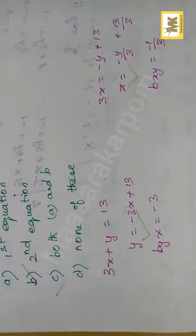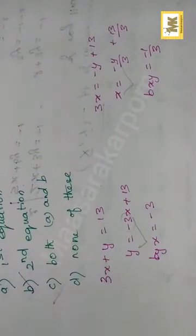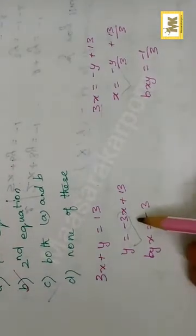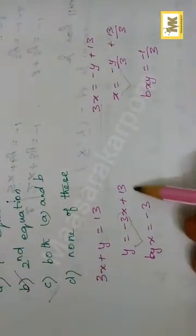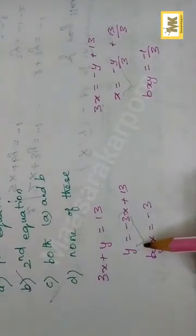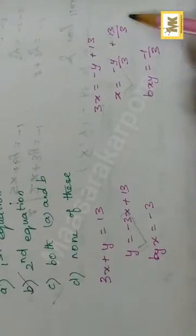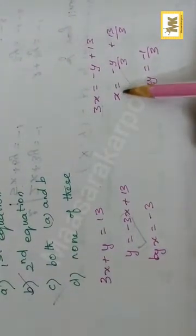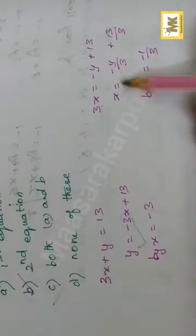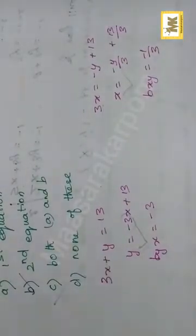From the first equation, 3x plus y equals 13, we get y is equal to minus 3x plus 13, so byx is equal to minus 3. Writing that equation in the form x equals, we get bxy is equal to minus 1 by 3.